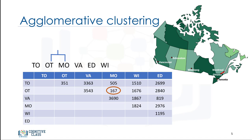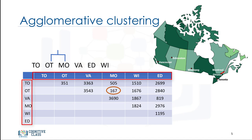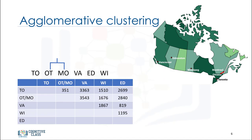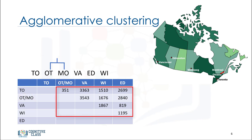Note that we use a simple one-dimensional distance feature here, but objects can be multi-dimensional, and distance measurement can be Euclidean, Pearson, average distance, or many others, depending on data type and domain knowledge. We have to merge these two closest cities in the distance matrix as well, so rows and columns are merged as the cluster is constructed. As you can see in the distance matrix, rows and columns related to Montreal and Ottawa are merged as the cluster is constructed.